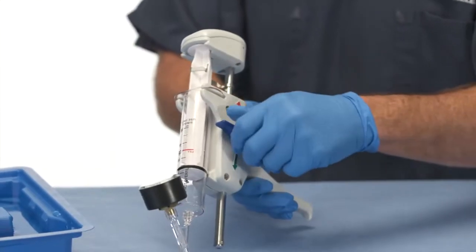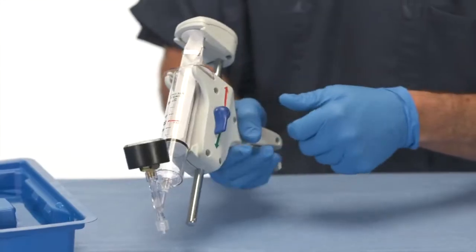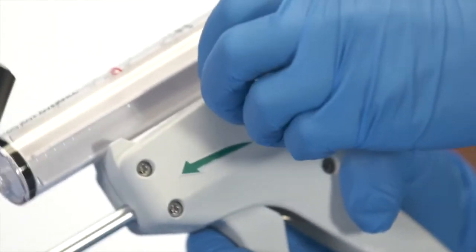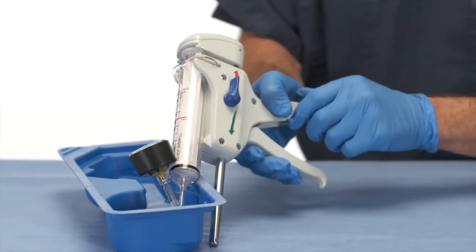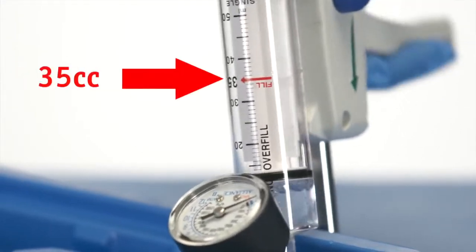Move the plunger forward. Turn the lever to the red arrow deflate position. Pump the handle to fill the syringe with 35 cc's of water.